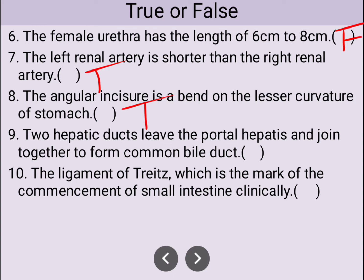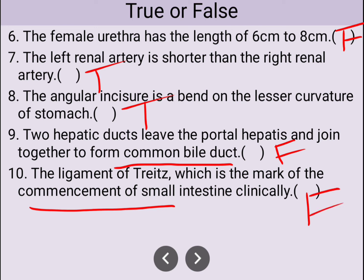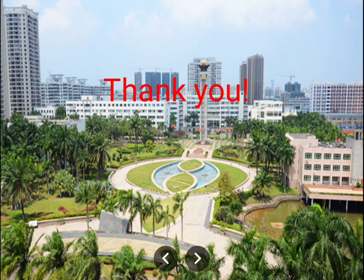Number nine: two hepatic ducts leave the porta hepatis and join together to form the common bile duct — that is false, because they join together to form the common hepatic duct, not the common bile duct. Number ten: the ligament of Treitz is the landmark for the commencement of the small intestine — that is also false, because it is the landmark between the duodenum and the jejunum. See you in the next video, thank you very much.